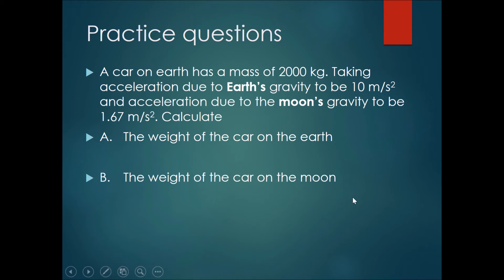Let's try some practice questions now. A car on earth has a mass of 2000 kg. Taking the acceleration due to earth's gravity to be 10 meters per second squared and acceleration due to the moon's gravity to be 1.67 meters per second squared, calculate the weight of the car on the earth and the weight of the car on the moon. Please pause the video here and try this out.